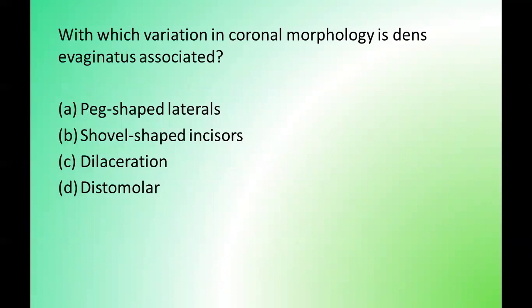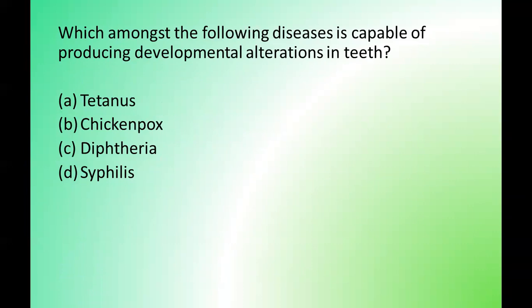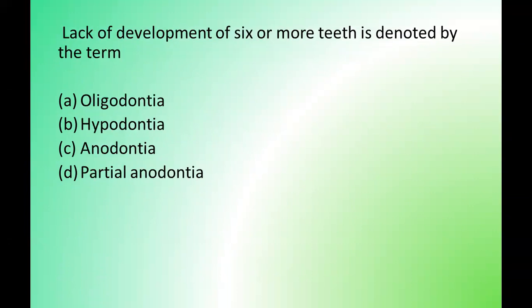Next question: with which variation in coronal morphology is dens evaginatus associated? Options are: peg-shaped laterals, shovel-shaped incisors, dilaceration, distomolar. The correct answer is option B — shovel-shaped incisors. Next question: which amongst the following diseases is capable of producing developmental alterations in teeth? Options are: tetanus, chickenpox, diphtheria, syphilis. The correct answer is option D — syphilis.